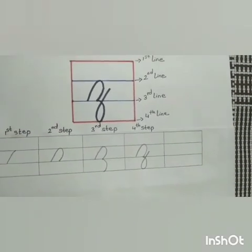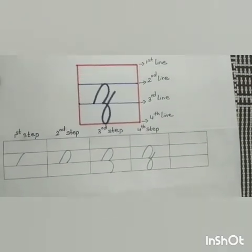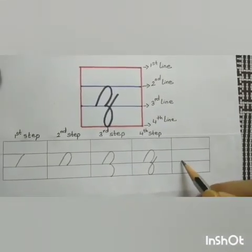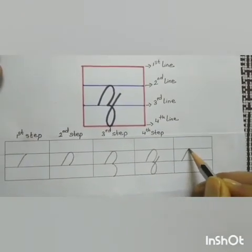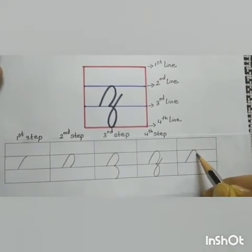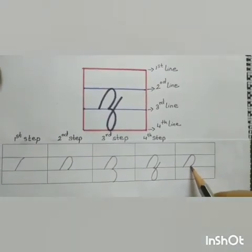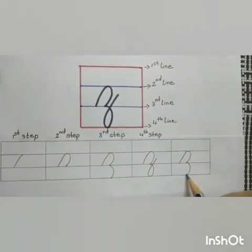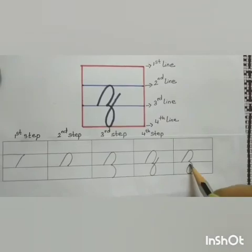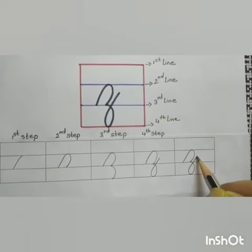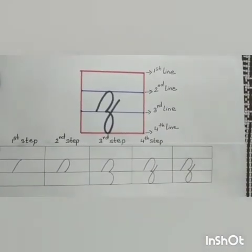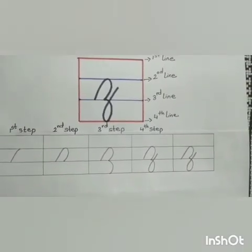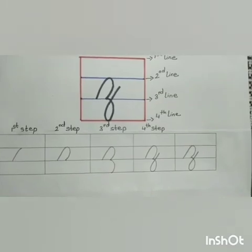So, children, this is small cursive z. Let us write it again. Start from the 3rd line, go up to the 2nd line. Then, make a right curve and go down to the 3rd line. Again, make a right curve from the 3rd line to the 4th line. Then, making a loop, go back up and finishing a little above the 3rd line. So, children, this is how we write small cursive z within 4 lines.